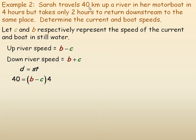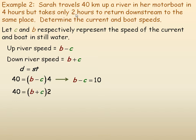The first sentence: Sarah travels 40 kilometers in 4 hours upstream, so the equation is 40 equals (B minus C) times 4. Dividing both sides by 4 simplifies to B minus C equals 10. Returning downstream, the distance is still 40 kilometers but the time is 2 hours, so 40 equals (B plus C) times 2. Dividing both sides by 2 gives B plus C equals 20. Here is our simplified system of equations.